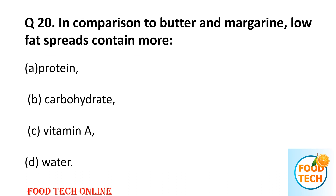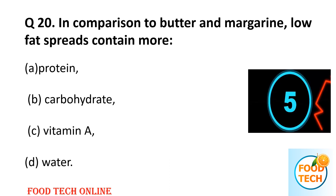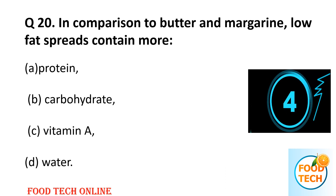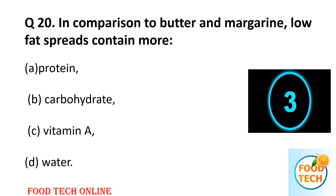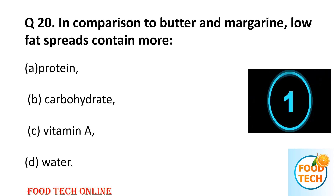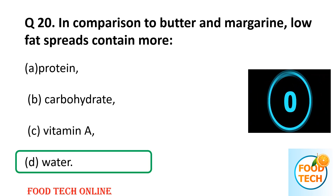Question 20: In comparison to butter and margarine, low fat spread contains more: A: protein, B: carbohydrate, C: vitamin A, D: water. Answer: D, water.